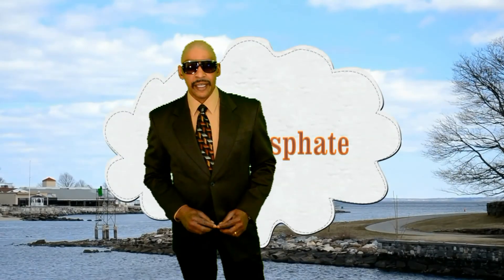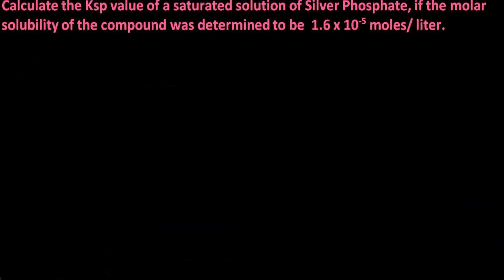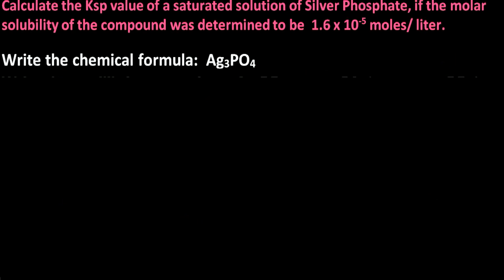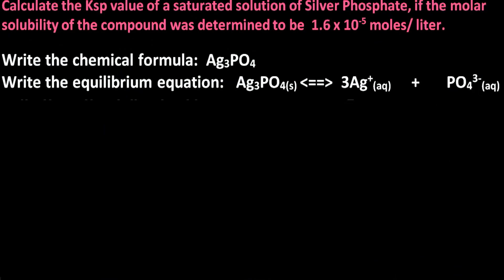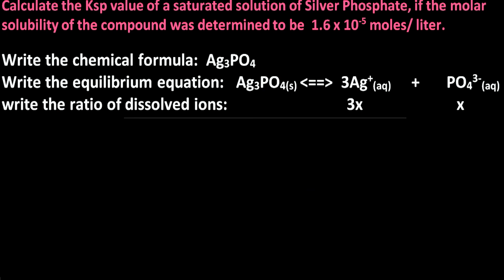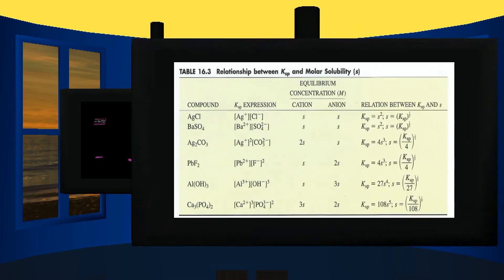Using a simpler technique, let's calculate the KSP value for silver phosphate. Calculate the KSP value of a saturated solution of silver phosphate if the molar solubility of the compound was determined to be 1.6 times 10 to the minus 5 moles per liter, which represents molarity. The chemical formula for silver phosphate is Ag₃PO₄. In solution, solid silver phosphate will reach equilibrium with 3 moles of silver cation plus 1 mole of phosphate anion, giving a molar ratio of dissolved ions of 3 to 1.